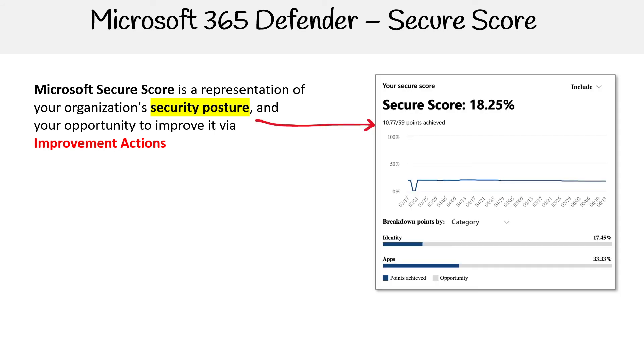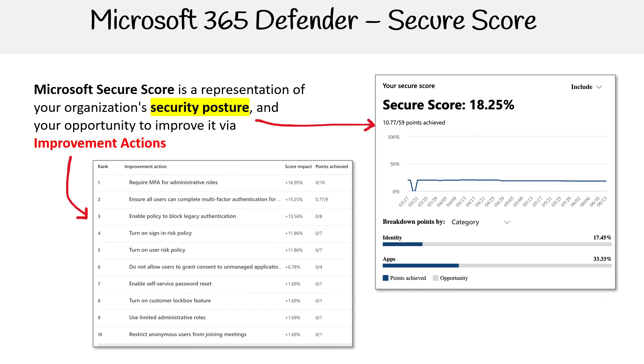Over here, we have the Secure Score, and you can see the improvement actions — it looks very similar to what we saw before.